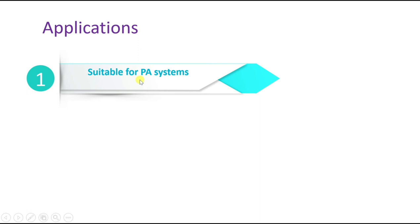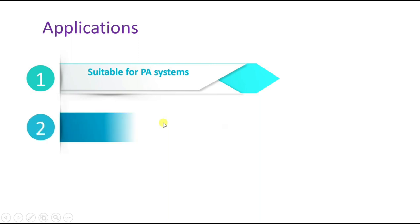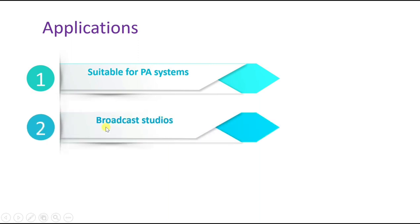For applications, we can use the moving coil microphone for public address (PA) systems — this is a very famous application. We can also use it for broadcast studios. These are the basic applications of the moving coil microphone.